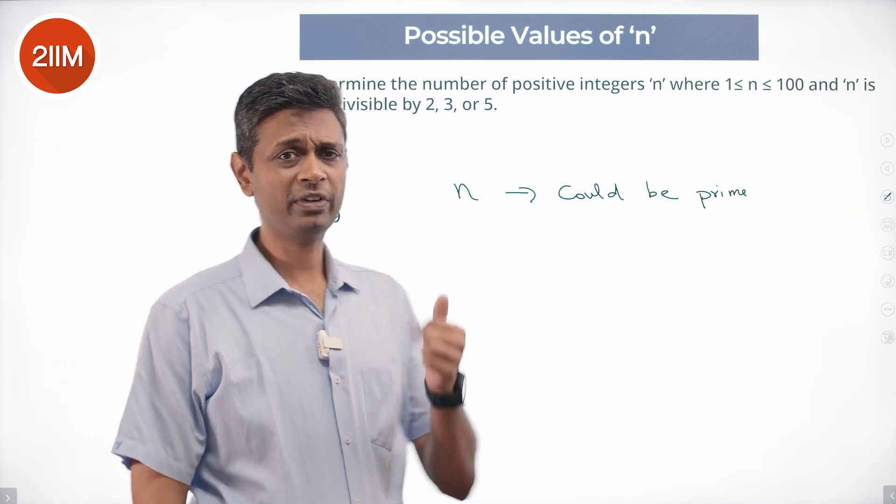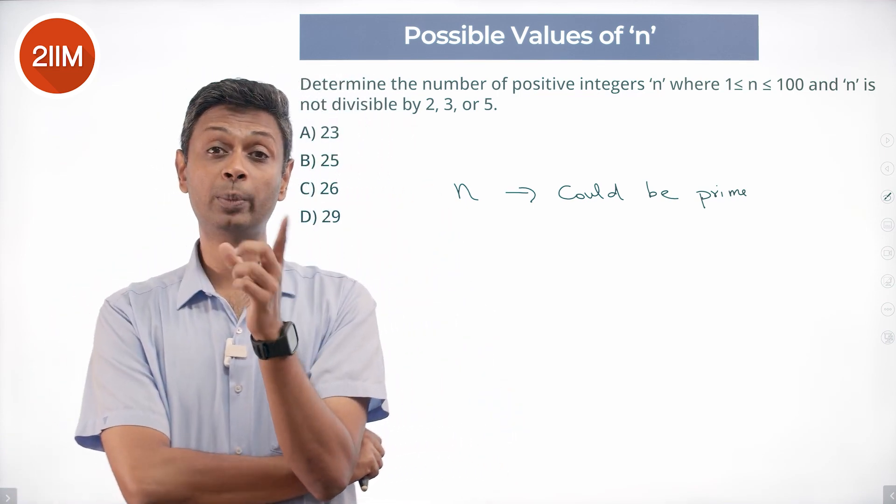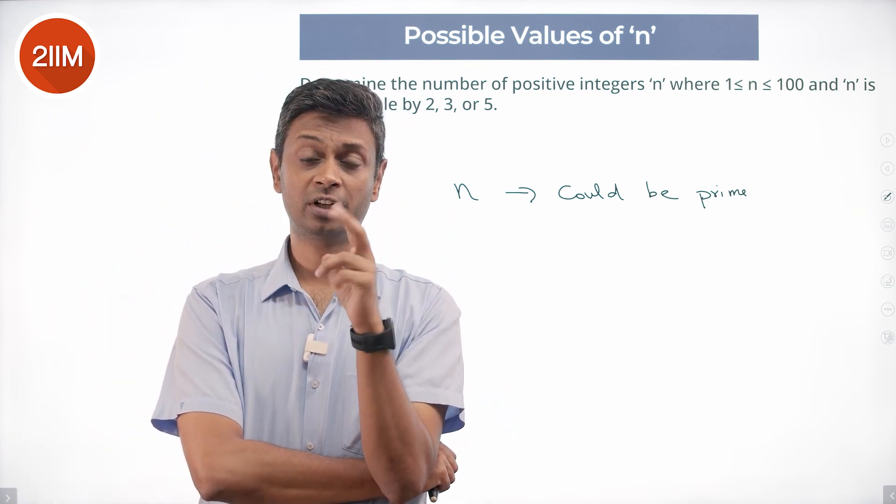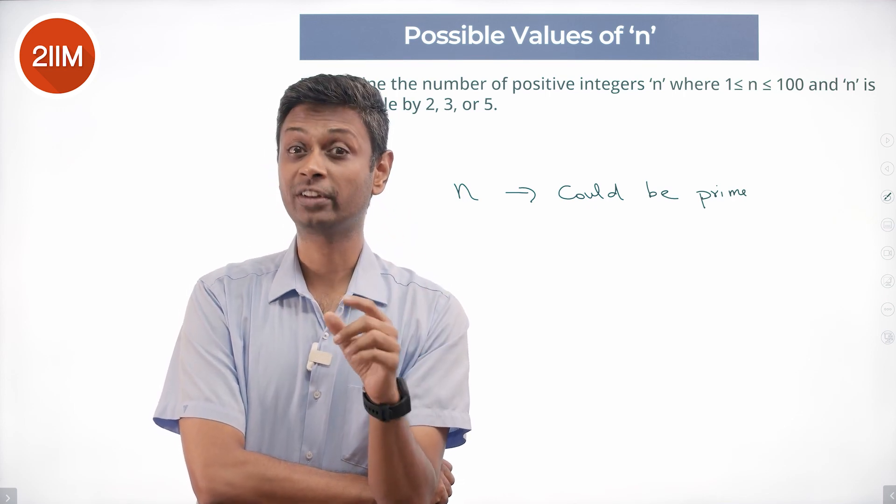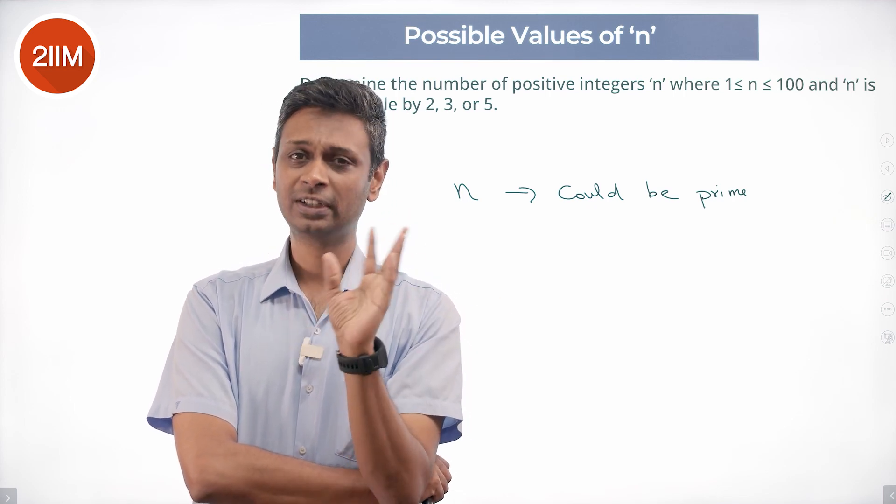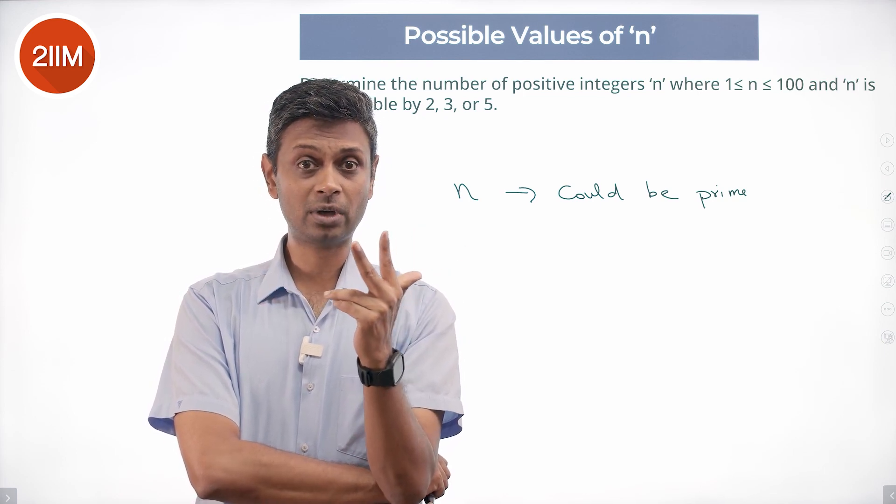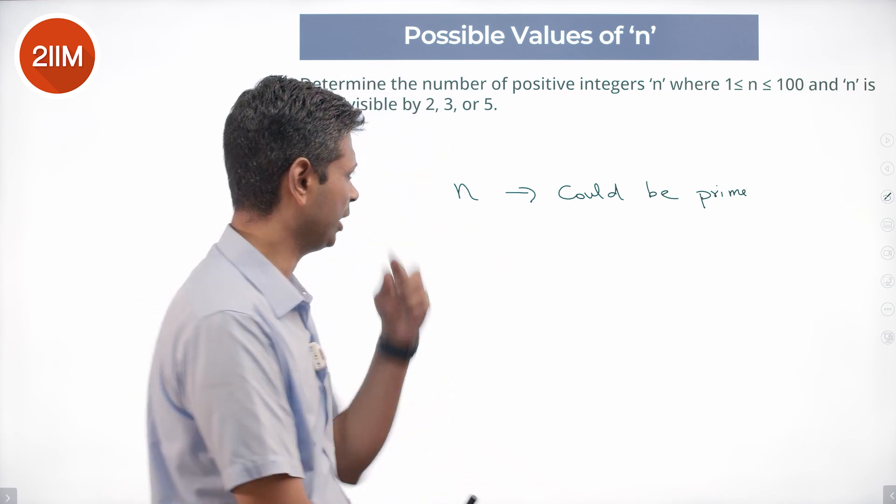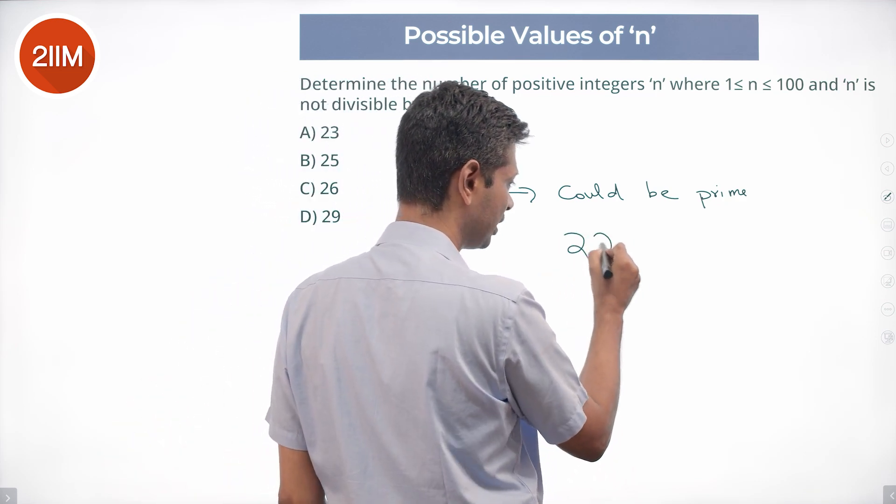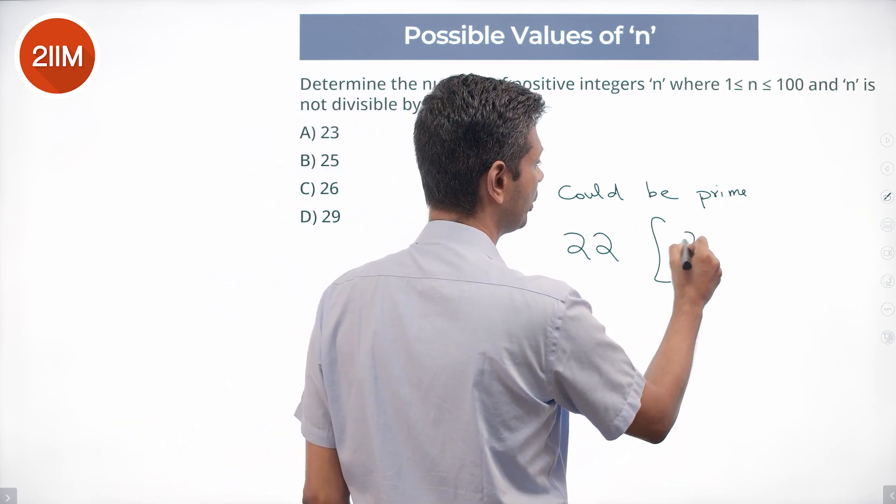So it could be 2, 3, 5, 7, 11, 13, 17, 19, all the way till 97. I know there are 25 primes less than 100. If you know that, it's easy; if you don't know that, you have to figure it out, which is a pain. Out of these 25, 2, 3, and 5 have to be removed.